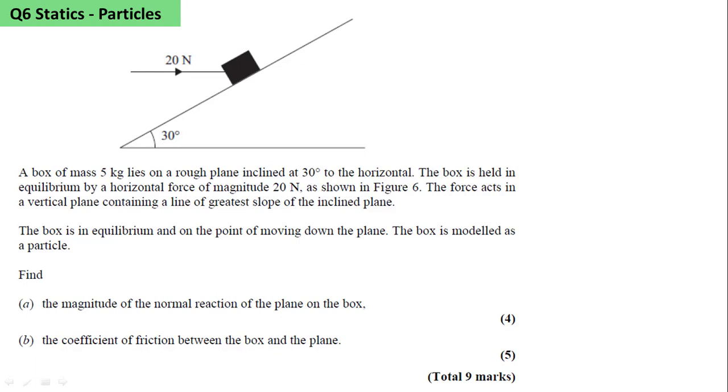Question 6: Statics of Particles. A box of mass 5 kilograms lies on a rough plane inclined at 30 degrees to the horizontal. We have the weight, a force of 5g, and we have the normal reaction R, and we can show that the angle between the reaction R and the weight is 30 degrees. The box is held in equilibrium by a horizontal force of magnitude 20N.